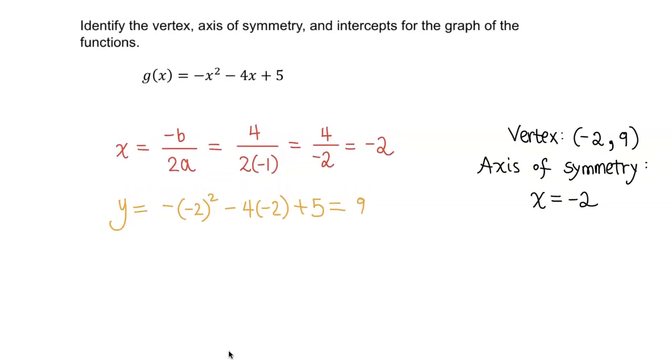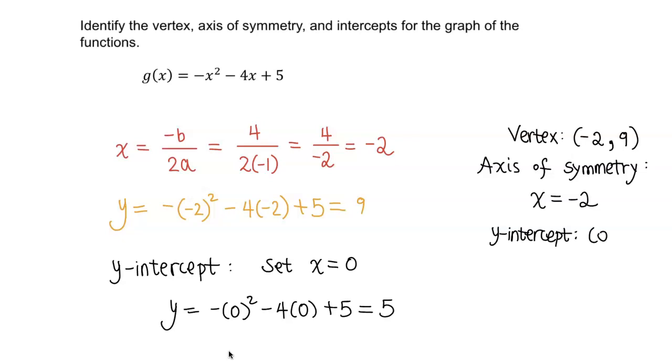Now we got to go find the intercepts. Let's do y-intercept first. If you want to find the y-intercept, you have to stay on the y-axis. And to be on the y-axis, the x-coordinate must be 0. So to find the y-intercept, plug in x equals 0. So we'll get negative 0 squared minus 4 times 0 plus 5. The first two terms will turn into 0, leaving us with just 5. Therefore, the y-intercept is 0, 5.